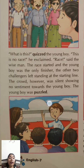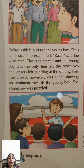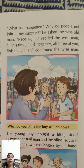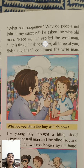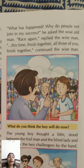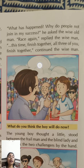The young boy was puzzled too, standing alone at the finishing line. He asked the people, 'Why do you not join my success?' He asked the wise old man the same. The wise man replied: 'Race again — this time finish together. All three of you, finish together.' He repeated it twice.